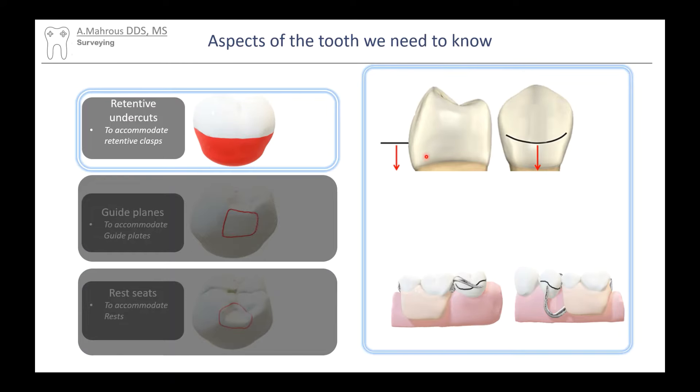Retentive undercuts are areas underneath the height of contour of the tooth where retentive clasps engage. That helps the RPD stay in, aka retention.